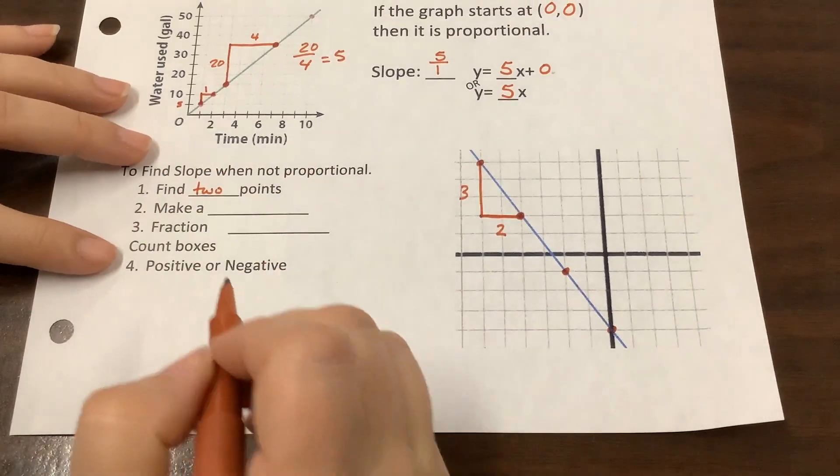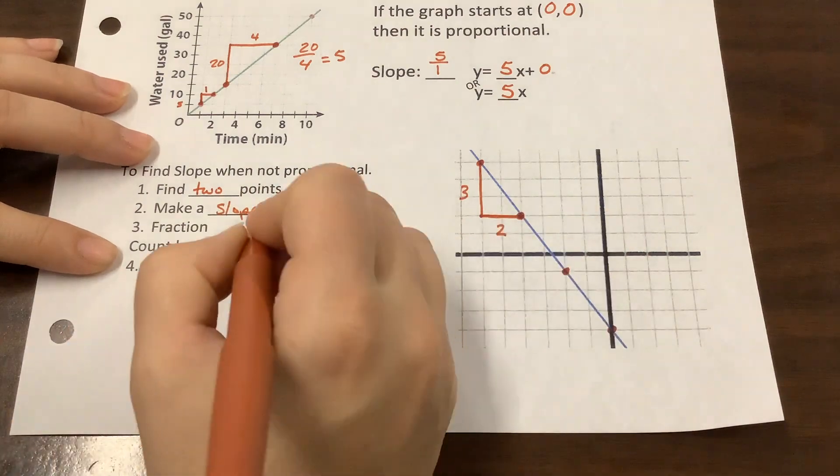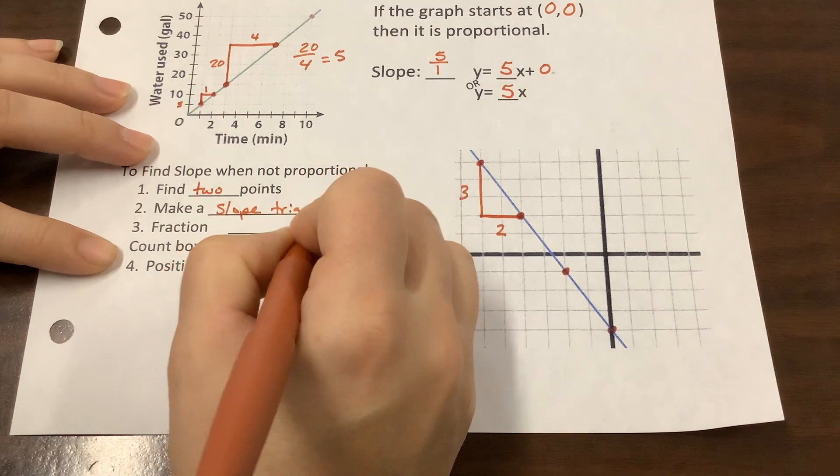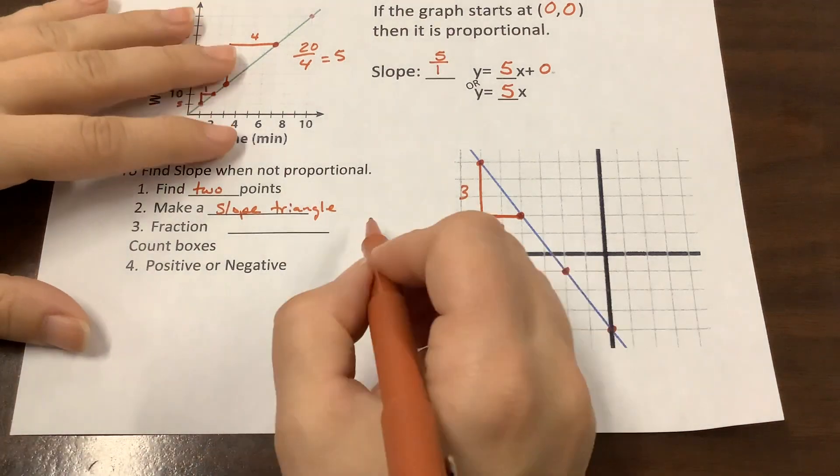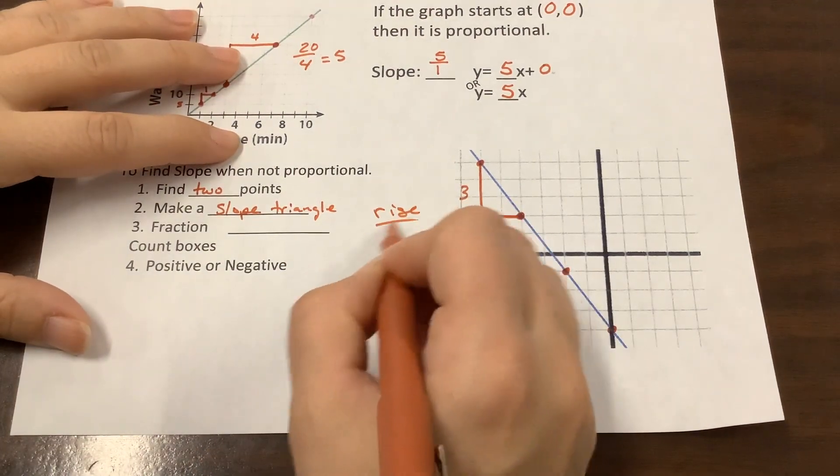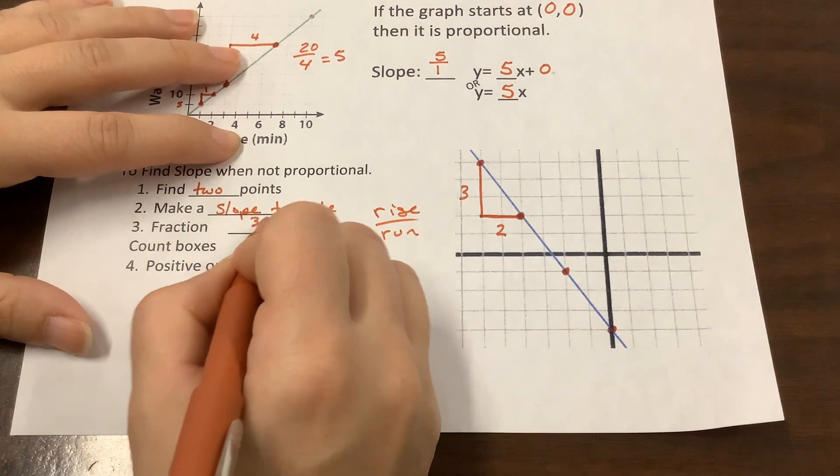Okay. So, find two points. Make a slope triangle. That's what that stair step is. You want to do your rise over run. So, your rise over run fraction is 3 over 2.